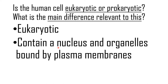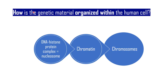We need to understand how the genetic material is organized within the nucleus of the cell. Within the nucleus of the human cell, DNA is wrapped around proteins known as histone proteins to form nucleosomes. The nucleosomes then stack together to form fibers called chromatin. The chromatin is then tightly coiled and condensed together to form the chromosomes. That is how DNA is tightly packed within the nucleus of the human cell.